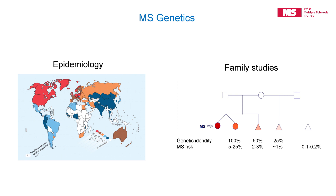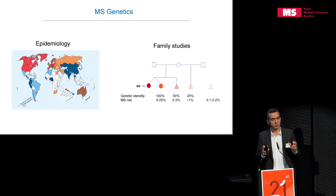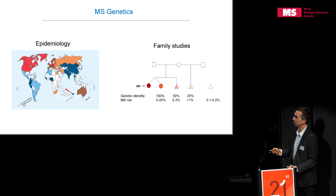The other strong argument comes from family studies. If someone is affected by MS, how high is the risk for relatives? For identical twins, depending on the study, between 5% and 25% will also be affected — a pretty high risk. For siblings, it's 2% to 3% lifetime risk, which is 20 to 30 times higher than in the general population. For half-siblings, it's around 1%, still considerably higher than for unrelated individuals. This clearly increased familial risk is another argument that genes are important in multiple sclerosis.